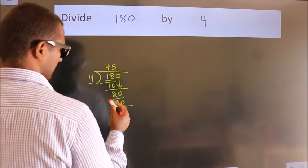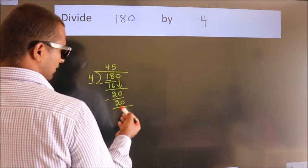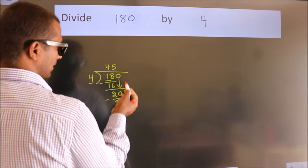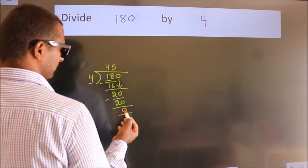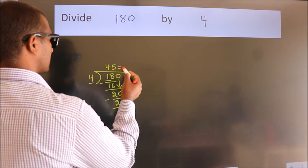Now we subtract and get 0. After this, there are no more numbers to bring down. We got remainder 0, so this is our quotient.